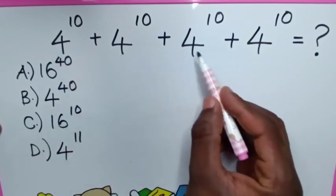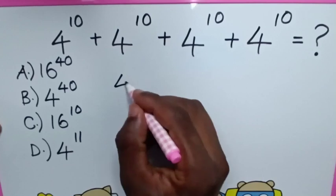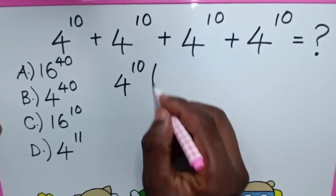So, in here 4 power of 10 is common. Then we take 4 power of 10 out of the bracket.